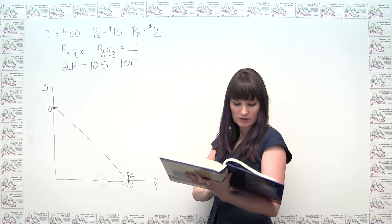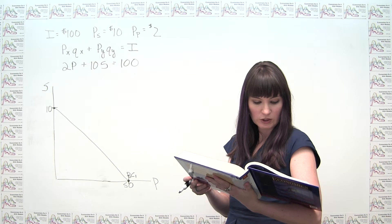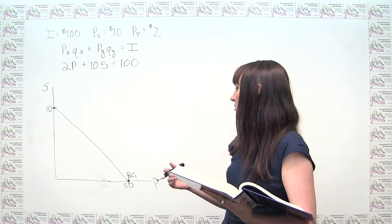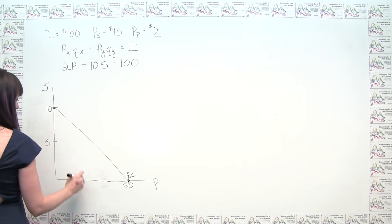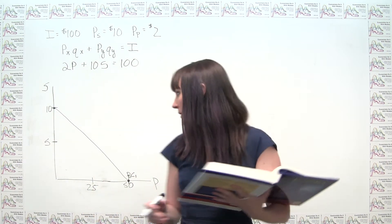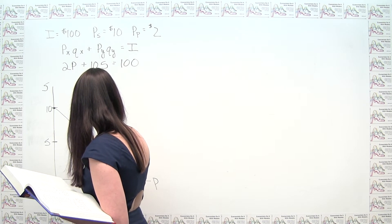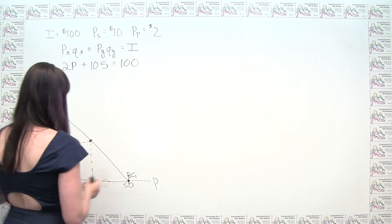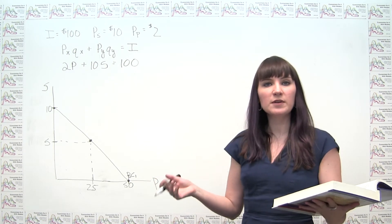So far, here's what our budget line looks like. The next thing that we were asked to do is it says, add an indifference curve for Cameron that is tangent to his budget line at the combination of 5 pounds of steak and 25 pounds of potatoes. So we can think about 5 pounds of steak is about here, and 25 pounds of potatoes is about here.